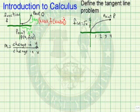Now, we want to find the slope of the line connecting these two points, and this line is called the secant line.